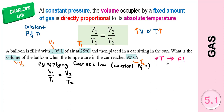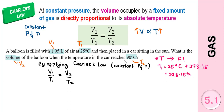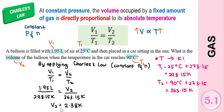To convert temperature into Kelvin, simply take the degree Celsius value and add 273.15. So T1 at 25 degrees Celsius becomes 298.15 Kelvin. Similarly, convert the second temperature into Kelvin: 90 degrees Celsius is 363.15 Kelvin. Then substitute into the formula and we get the second volume V2 is 2.38 litres.